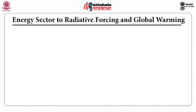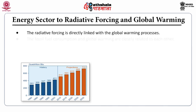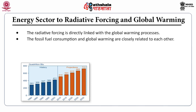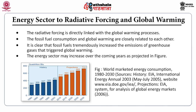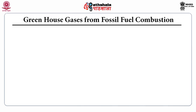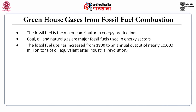Energy production and consumption is a major cause for the emission of greenhouse gases and air pollutants that in turn affect radiative forcing and global warming. The radiative forcing is directly linked with global warming processes, and fossil fuel consumption and global warming are closely related to each other. Fossil fuel has tremendously increased the emission of greenhouse gases that triggered global warming. Coal, oil, and natural gas are major fossil fuels used in energy sectors. Fossil fuel use has increased from 1800 to an annual output of nearly 10,000 million tons of oil equivalent after the industrial revolution.